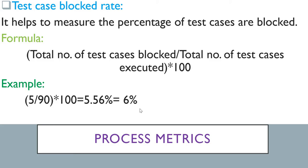Next is test case block rate. Besides pass and fail rate, there is another measurement — the block rate — and it happens in real life. Some test cases you are not able to execute for different reasons: you didn't have enough testing data, your environment was not ready, or there is a dependency on another test that isn't ready. It helps you measure the percentage of test cases blocked. The formula is: total number of test cases blocked divided by total number of test cases executed, multiplied by 100. For example, 5 blocked out of 90 executed gives approximately 6% block rate.